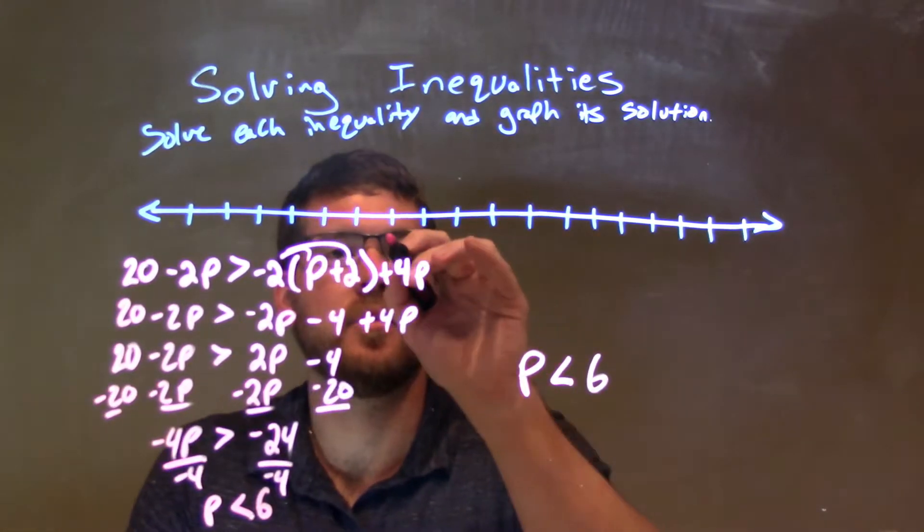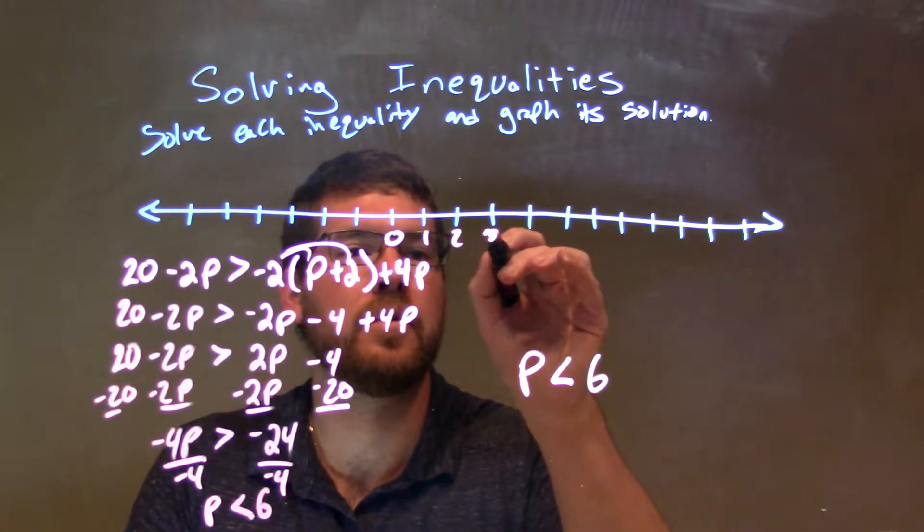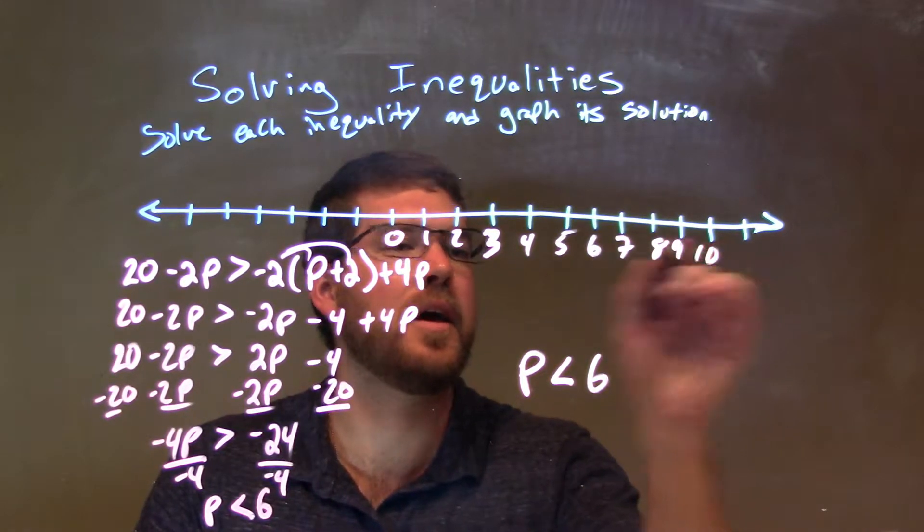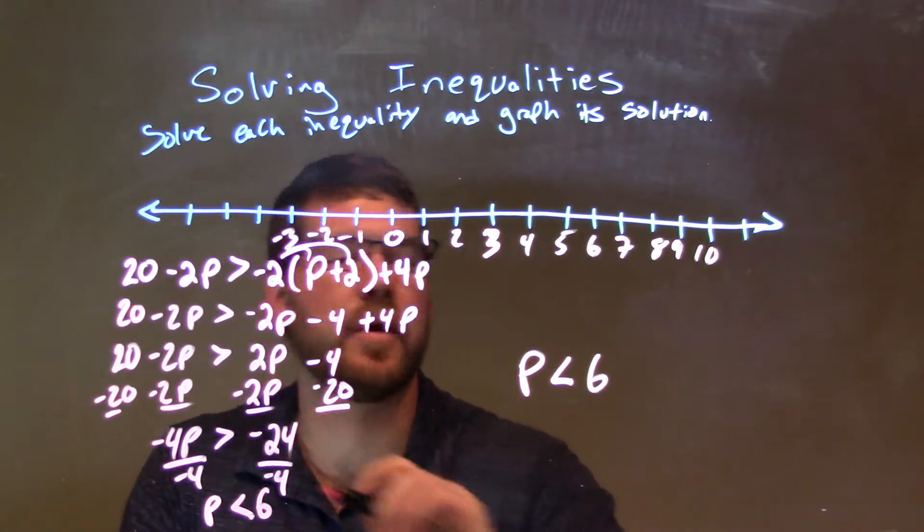So, we just need to graph it. So, we have, I'll put 0 here, 1, 2, 3, 4, 5, 6, 7, 8, 9, and 10. Negative 1, negative 2, negative 3, there we go.